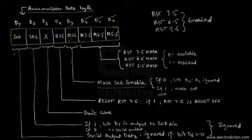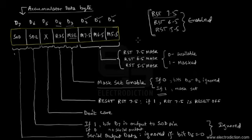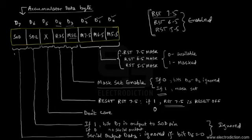To enable the RST interrupts, we also need to set bit D3 to logic one. Bit D3 is referred to as Mask Set Enable (MSE). We need to set D3 to logic one in order to activate the masking capability of the RST interrupts. Additionally, bit D4 is a control bit for RST 7.5 — if D4 is set to one, RST 7.5 is reset (disabled), so we keep D4 at logic zero to keep RST 7.5 active.